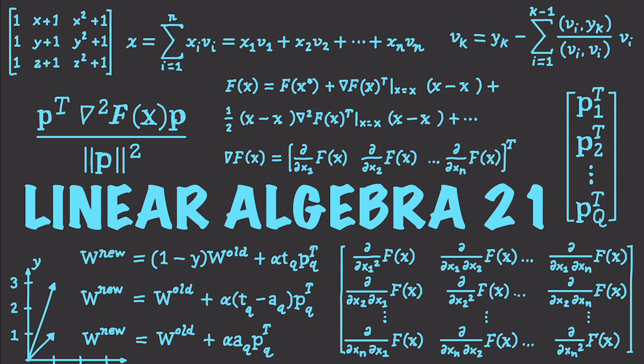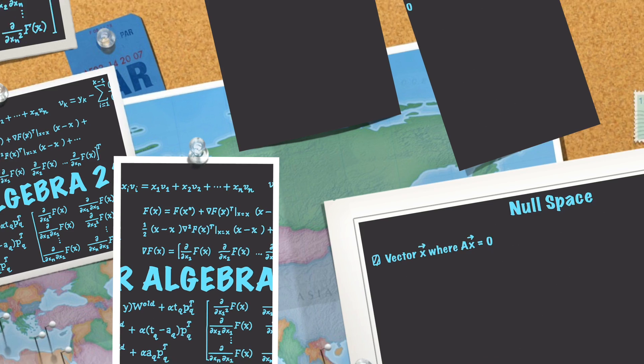Hello Internet, and welcome to part 21 of my linear algebra tutorial series. In this part of the tutorial I'm going to talk about the four fundamental subspaces: the null space, the column space, the row space, and the left null space. And I have a lot to do, so let's get into it.